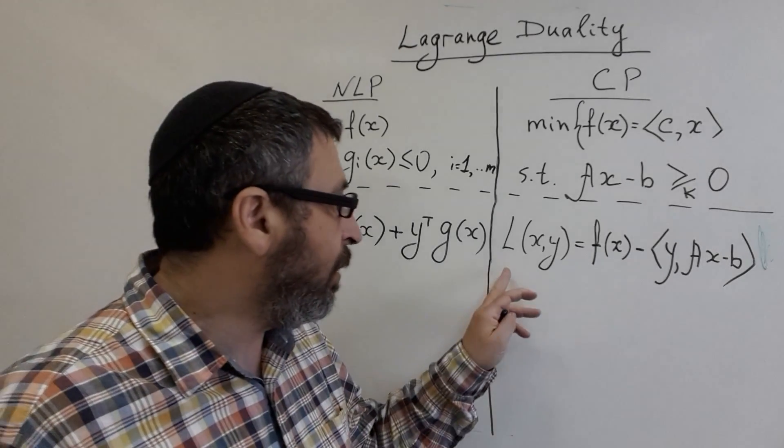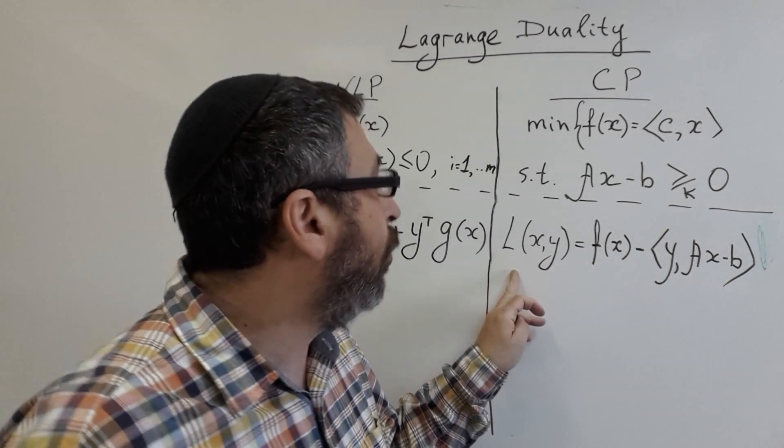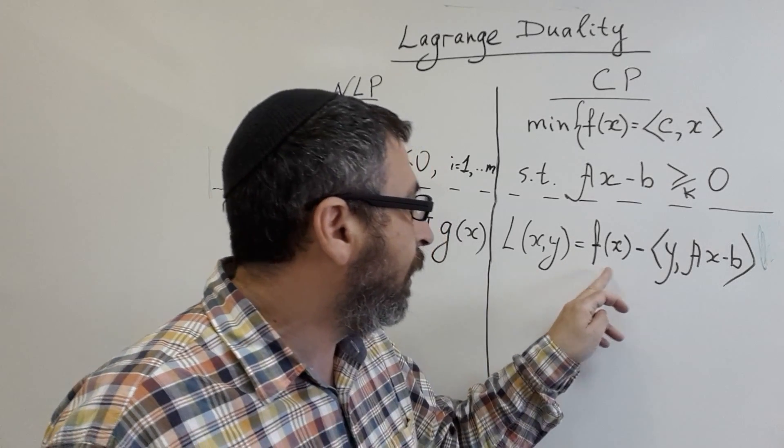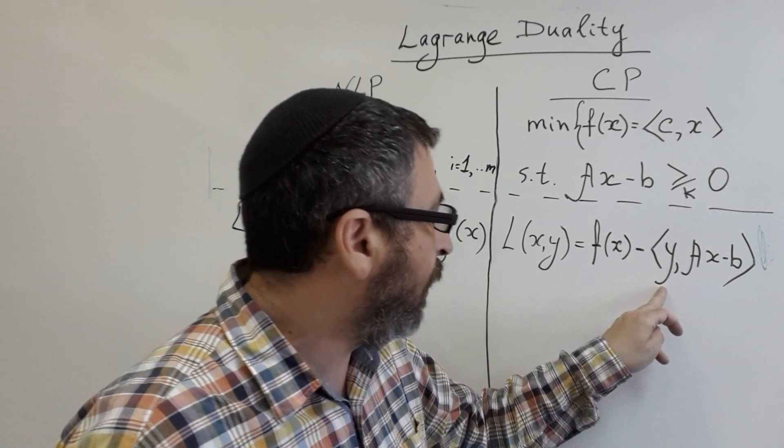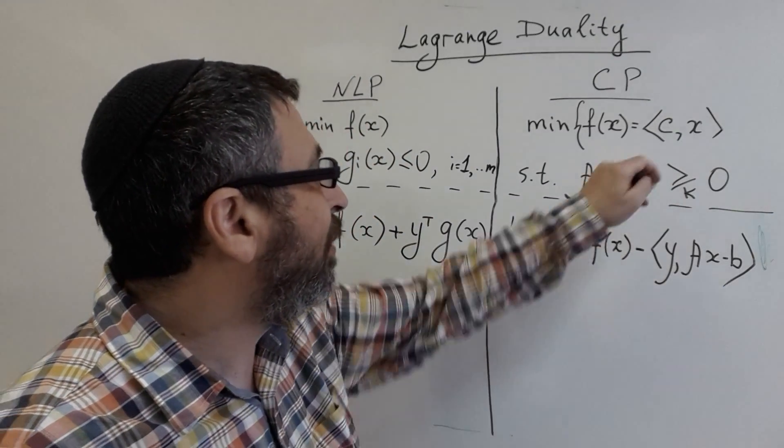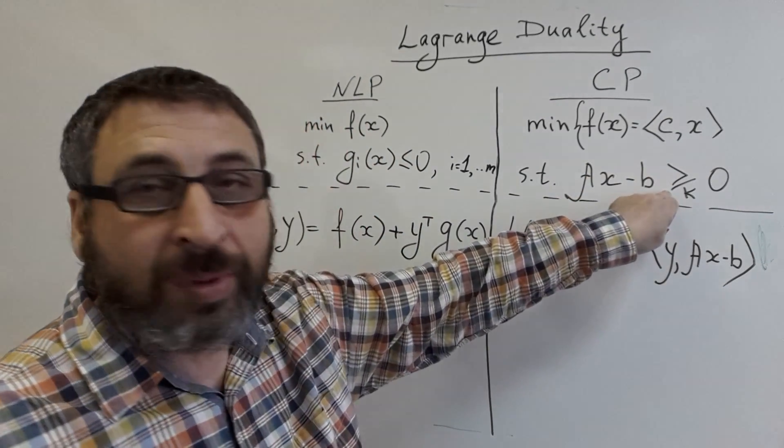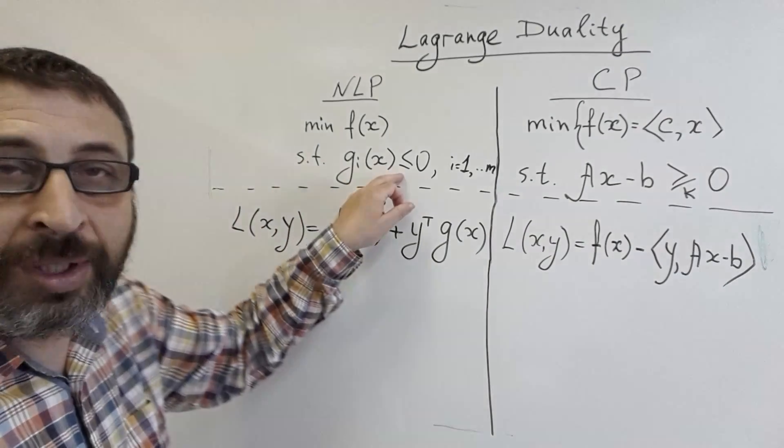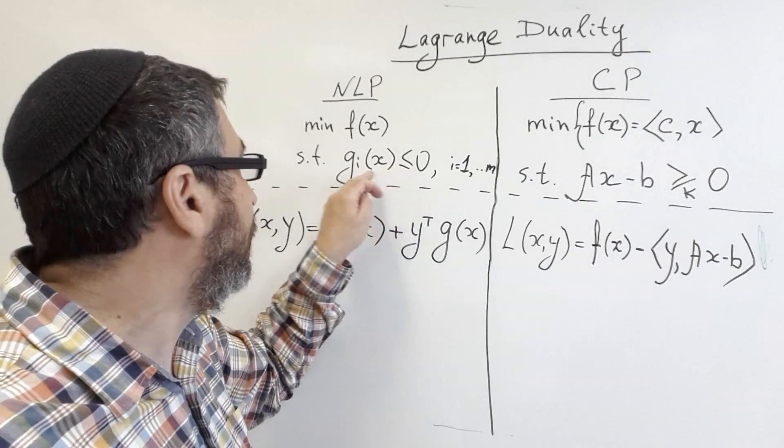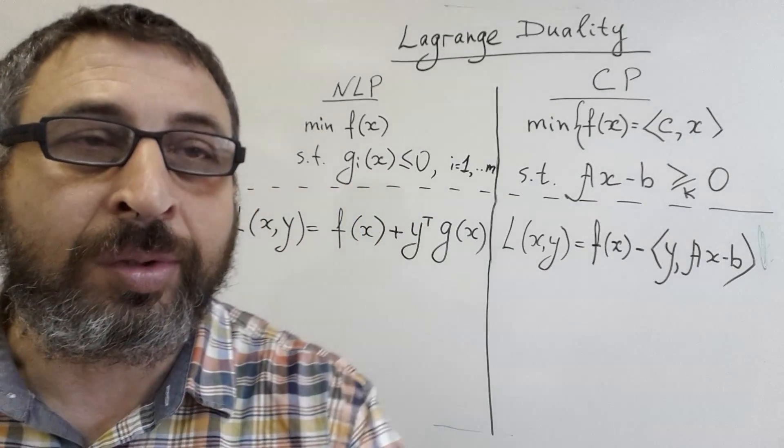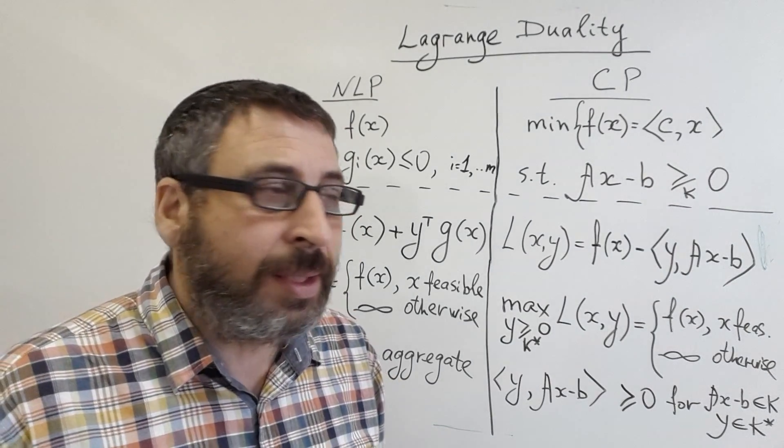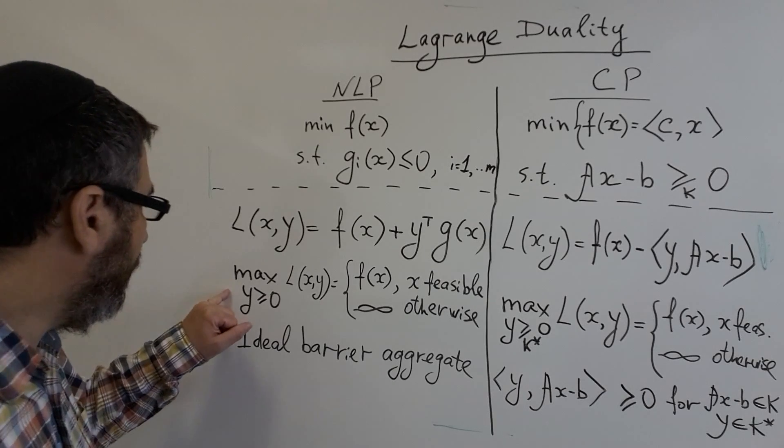In a similar way, for conic programming we have objective function minus inner product of Lagrangian with the constraints. Minus because our constraint is greater or equal to zero, in contrast to nonlinear programming where the convenient way is to say that constraints are less or equal to zero.